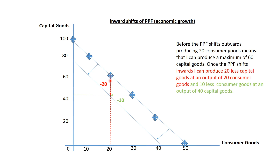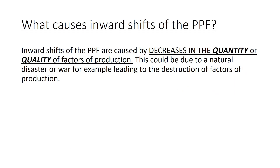That means I've lost the ability to produce 20 capital goods. And on the flip side, before the PPF shifts inwards, when producing 40 capital goods I can produce 30 consumer goods. But after the shift, when I produce 40 capital goods, I can only produce 20 consumer goods — meaning I've lost the ability to produce 10 consumer goods. Inward shifts of the PPF are caused by decreases in the quantity or quality of factors of production. This could be due to a natural disaster or a war, which may lead to loss of life and therefore loss of labour, or the destruction of land and natural resources.